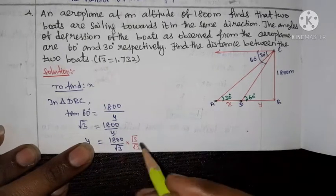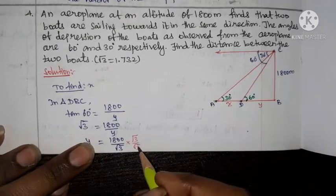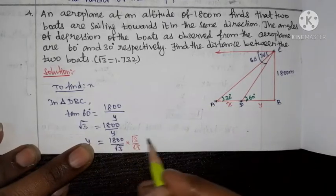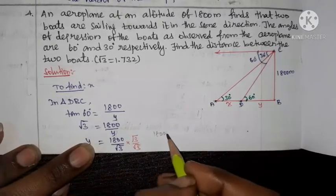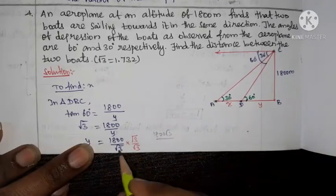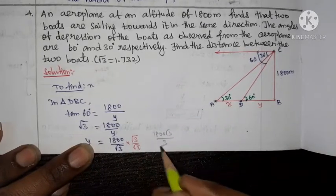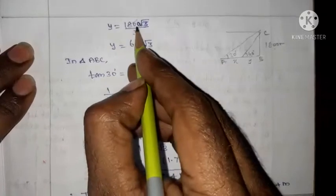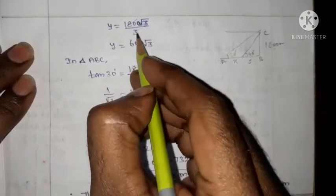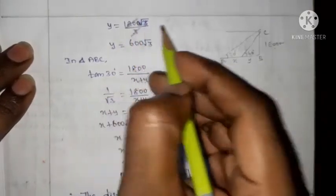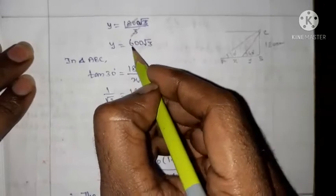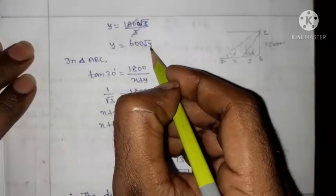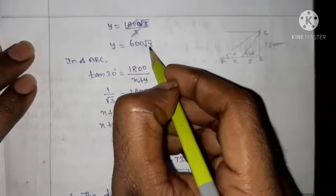Multiplying numerator and denominator by root 3 (conjugate), y equals 1800 by root 3 into root 3 over root 3. Cancelling, y equals 600 root 3.